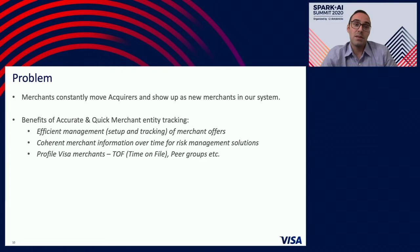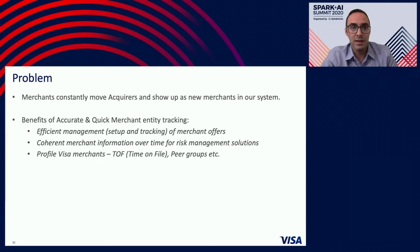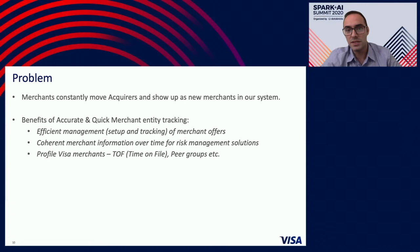This brings us to the problem statement: merchants are constantly moving acquirers in our system and they are showing up as new merchants. So how do we link those new merchants to existing merchant entities in our system that have just changed their entry? If we are able to do that, we have a lot of benefits. The first being efficient management of merchant offers. We can have coherent merchant information over time for our risk management systems, and it helps prevent bad players from using the system. We can also profile our merchants based on their time on file and create their peer groups.